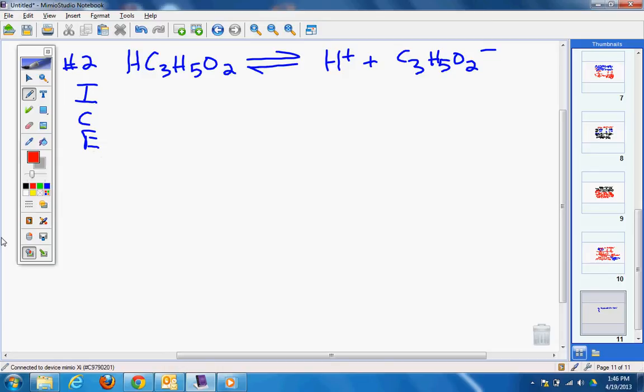What do we have for the first one? 0.1. Here? Zero. Here? Zero. What about change? Minus X, plus X, plus X. What do we have for equilibrium? 0.1 minus X, X, X. Now we have that. We don't need it just yet. Because we have to figure out what the concentration is of H⁺ from the data we already have. Using the POH and the pH is going to do 10 to the negative.